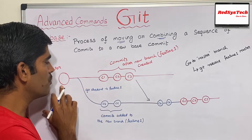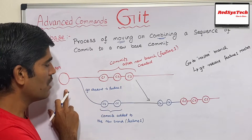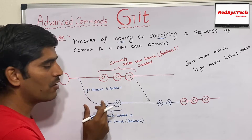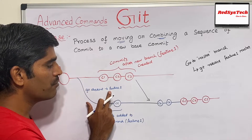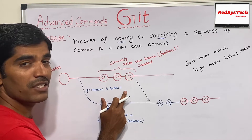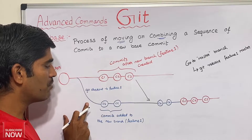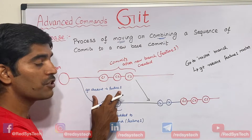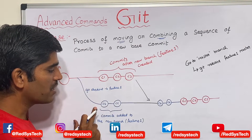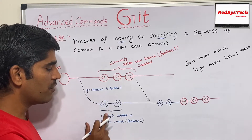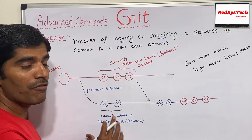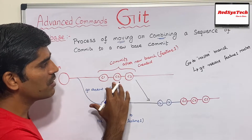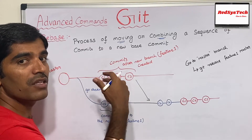Let's assume you have a master branch, and from the master branch you run 'git checkout -b feature1', which means you are taking a copy of the master branch, creating a new branch called feature1, and switching to it. In this branch you are making two commits — let's say C4 and C5. While you are doing this, some other developer makes changes.